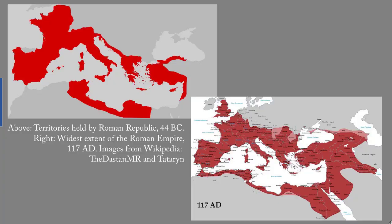Location: Roman civilization begins in the center of the Italian peninsula. It expands to most of the area around the Mediterranean and much of western Europe, including the southern part of what is now Great Britain.